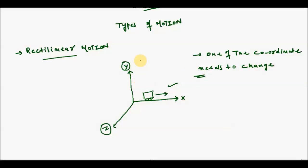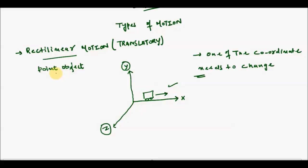A term closely related to rectilinear motion is translatory motion. They share the same definition, but the difference is that rectilinear motion is defined for a point object or an object with unit mass, while translatory motion is defined for a real object — like a car, truck, or bus.